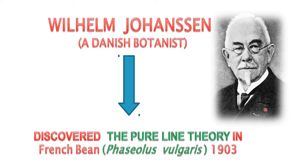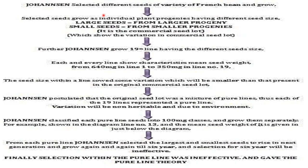Wilhelm Johannsen, a Danish botanist, discovered pure line theory in French bean, that is Phaseolus vulgaris, in 1903. Johannsen selected different seeds of a variety of French bean and grew them — selected seeds grown in individual plant progeny having different seed size.